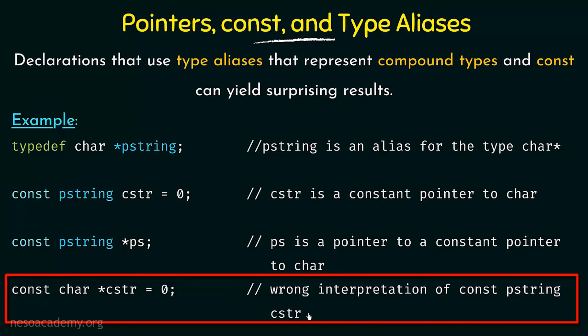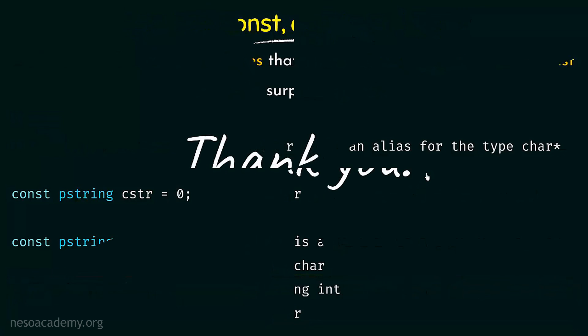As we can see, when we combine type aliases with compound types and constants they can yield surprising results. At first glance you may think the declaration is correct, but once we made the first declaration, making another conflicting one throws an error. We should be very careful when using type aliases with compound types and constants. I hope this lecture was clear. Thank you for watching and see you in the next one.